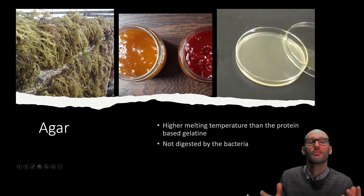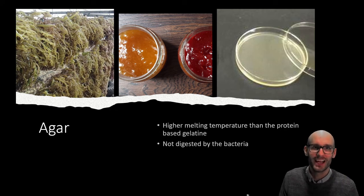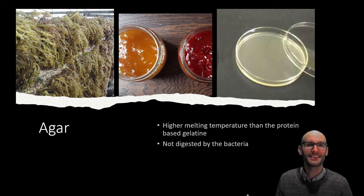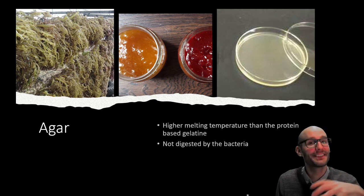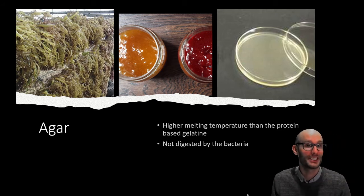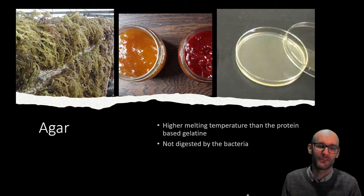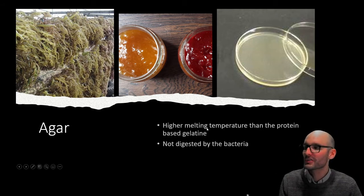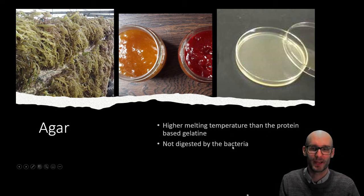Koch originally put them in heavy bell jars, until one of his students — whose last name was Petri — discovered that glass dishes could work. That's where the Petri dish came from. Agar had a higher melting temperature than protein-based gelatin and was not digested by the bacteria, making it ideal.